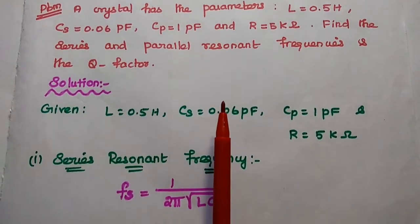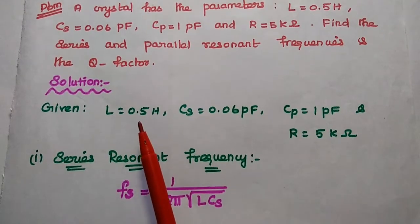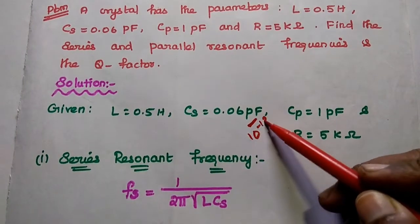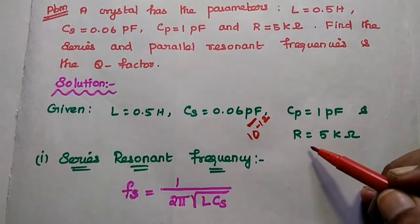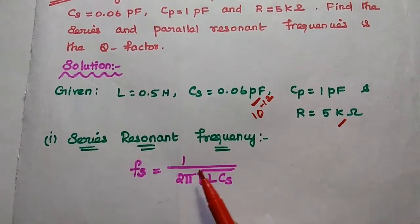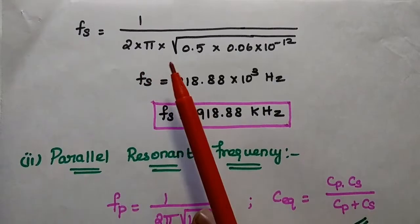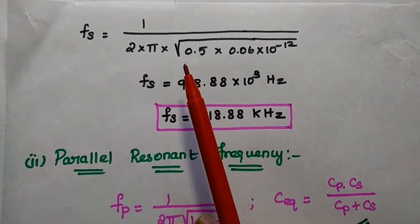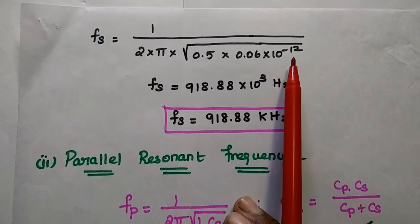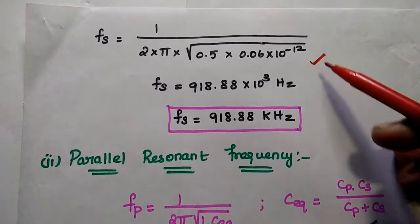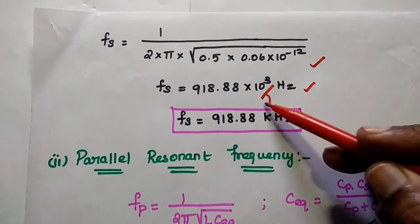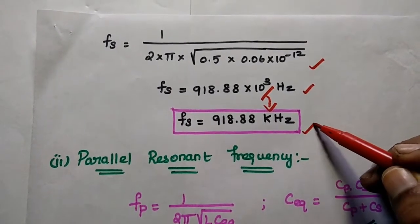In the solution, first we note the given data: inductance L = 0.5 Henry, series capacitance Cs = 0.06 picofarad = 0.06 × 10⁻¹² F, Cp = 1 picofarad, and R = 5 kilo-ohm. First we find the series resonant frequency using the formula Fs = 1 by 2π√(L × Cs). Substituting the values — L = 0.5 and Cs = 0.06 picofarad — and simplifying with a calculator, we get Fs = 918.88 × 10³ Hz, which is 918.88 kilohertz. So the series resonant frequency is found.